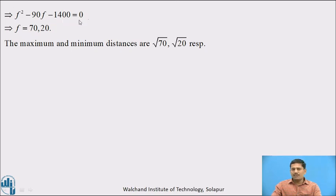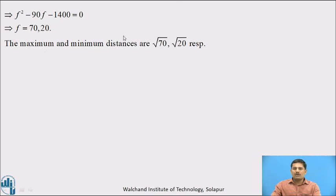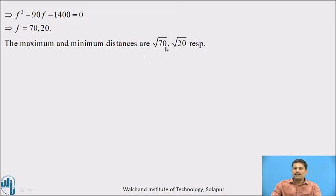This is a quadratic polynomial in f with roots f = 70 and f = 20. Since f = d², the actual distance values are √20 and √70. Therefore, the maximum and minimum distances from the origin to the curve are √70 and √20 respectively.